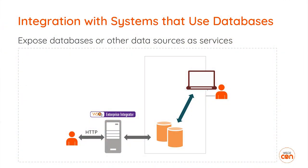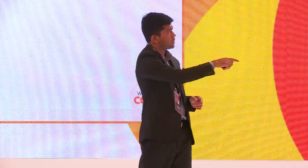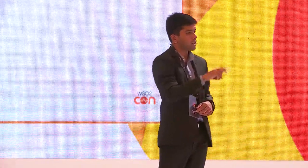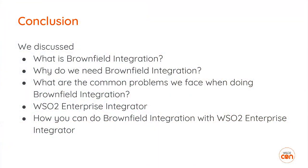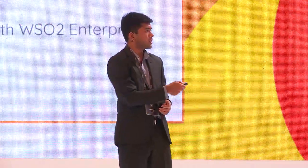For systems that don't provide much integration but internally use data sources or storage mechanisms to store state, we can use the data integration capabilities in Enterprise Integrator — configure it to expose that data source as a data service, then use that data service to do compositions and expose it as a service to the outside. In conclusion, I explained what brownfield integration is, why it is important in the enterprise, the common problems faced, and how you can use Enterprise Integrator to solve all these problems. Thank you.